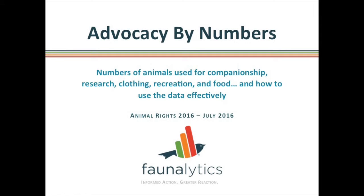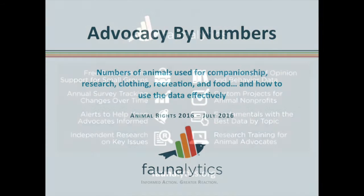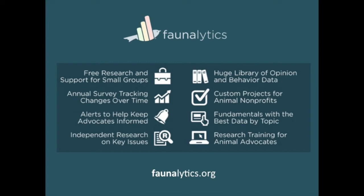My name is Che Green. I'm with an organization called Faunalytics. For about 15 years, we have served as the research arm of the animal protection movement. What we do is a few different things: we work directly with animal protection groups to help them measure their impact and see how they can be more effective. We provide independent studies on topics relevant to the movement, and we create resources for individual advocates to help them apply research to their advocacy.